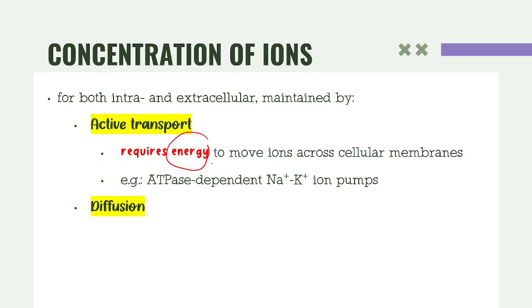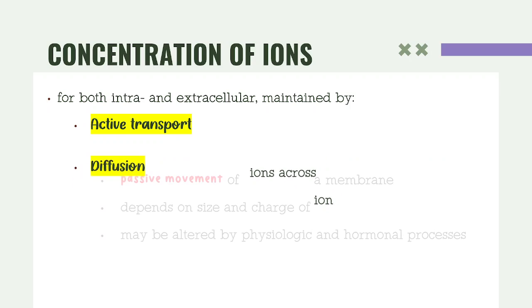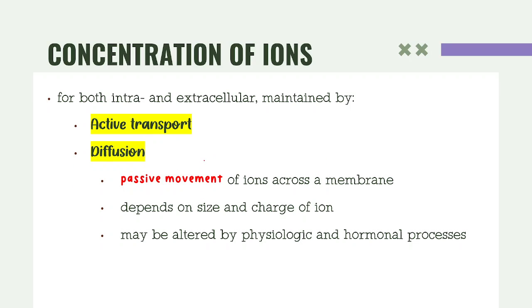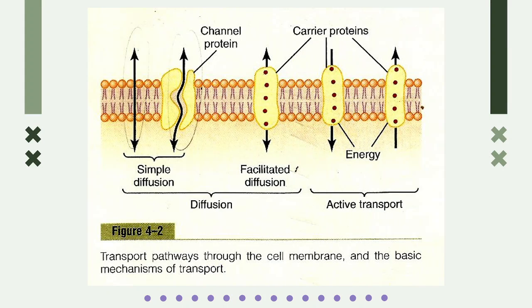An example of active transport is the ATPase-dependent sodium-potassium ion pump. Diffusion is a passive movement of ions across a membrane, depending on size and charge of the ion, and can be altered by physiologic and hormonal processes. There are two types of passive transport: simple and facilitated diffusion. For active transport, this shows ATP; for passive, there is simple diffusion (number 3) and facilitated diffusion (number 4).